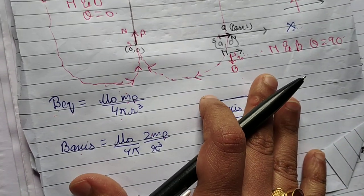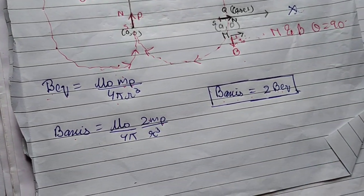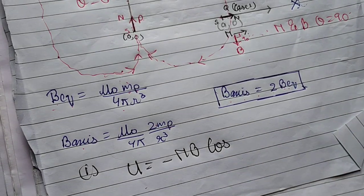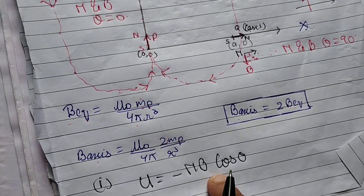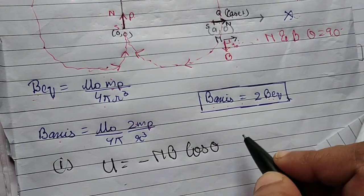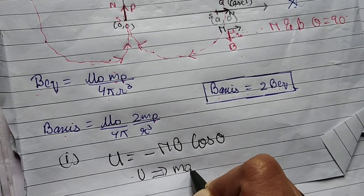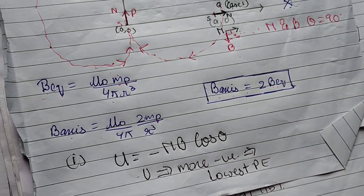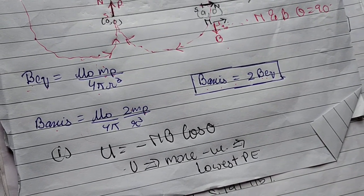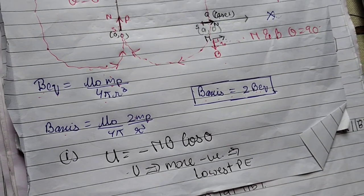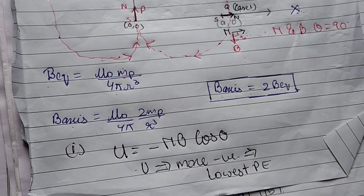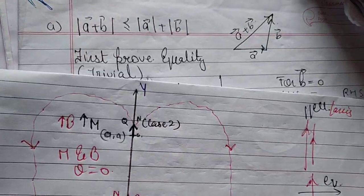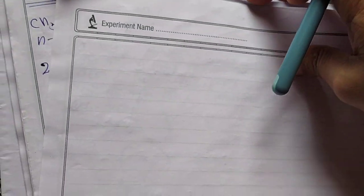This is the equatorial position. Now torque and energy. The potential energy is given by U equals minus MB cos theta, where theta is the angle between M and B. We will see which case gives the equilibrium position by examining M and B in each case.